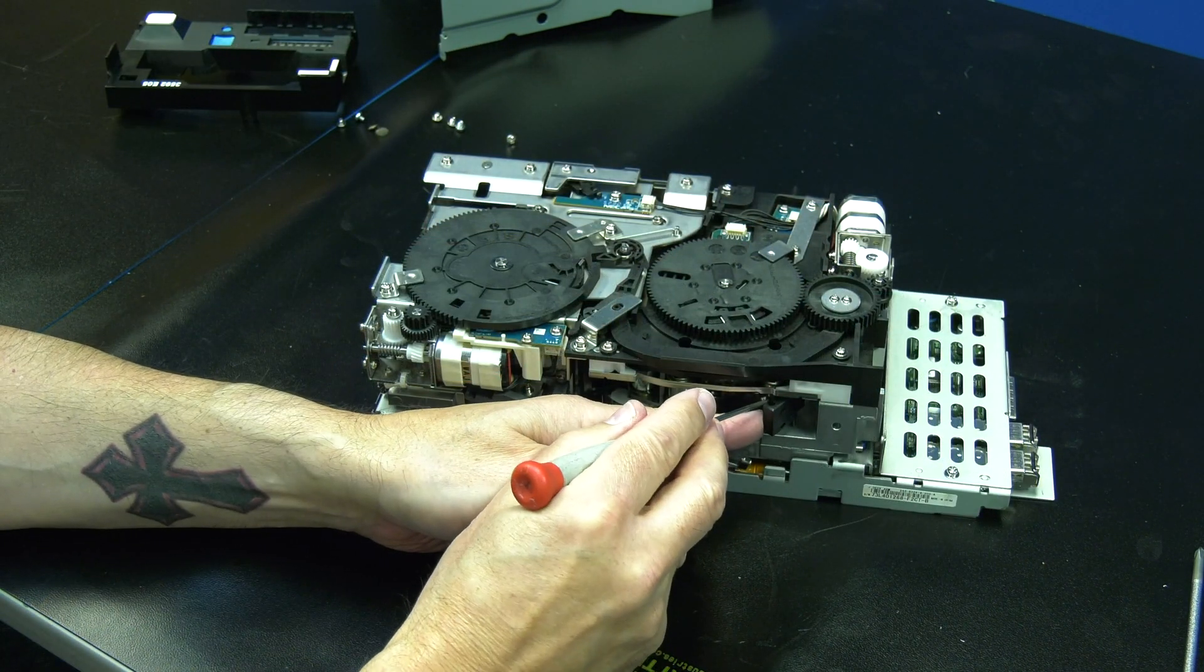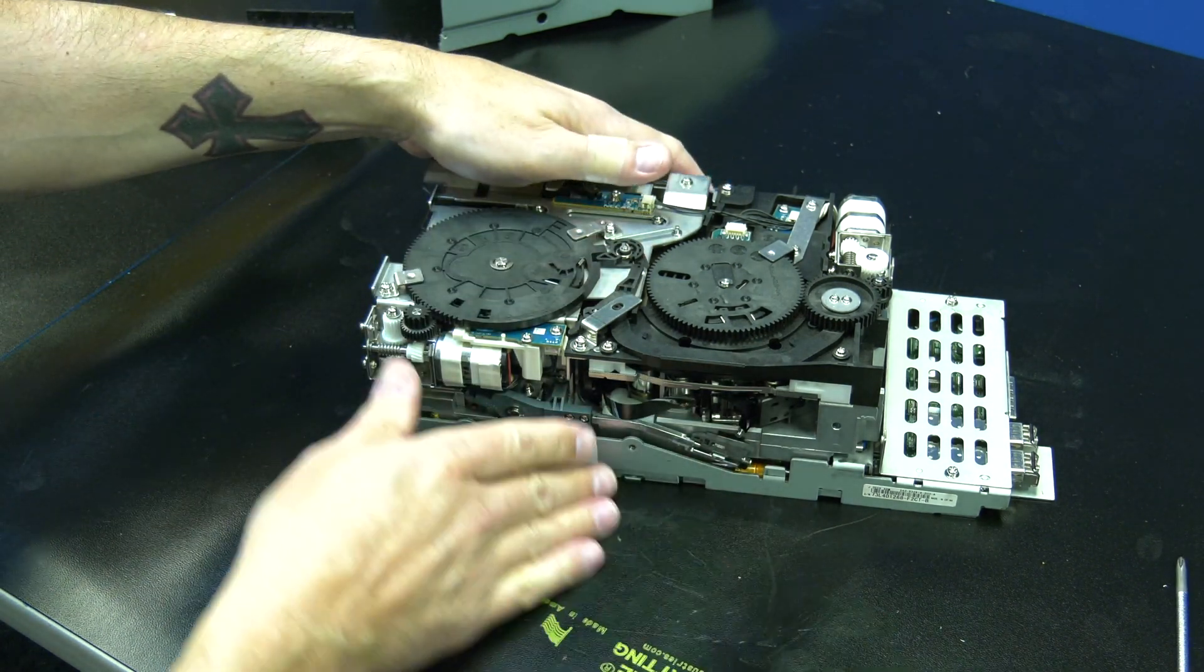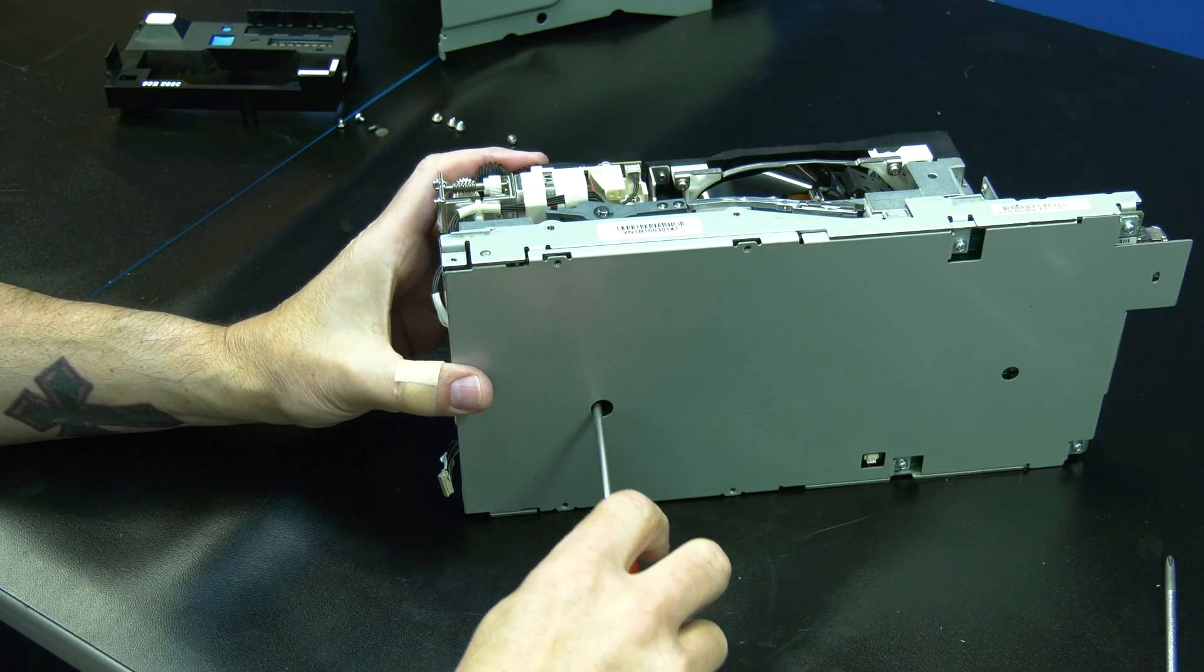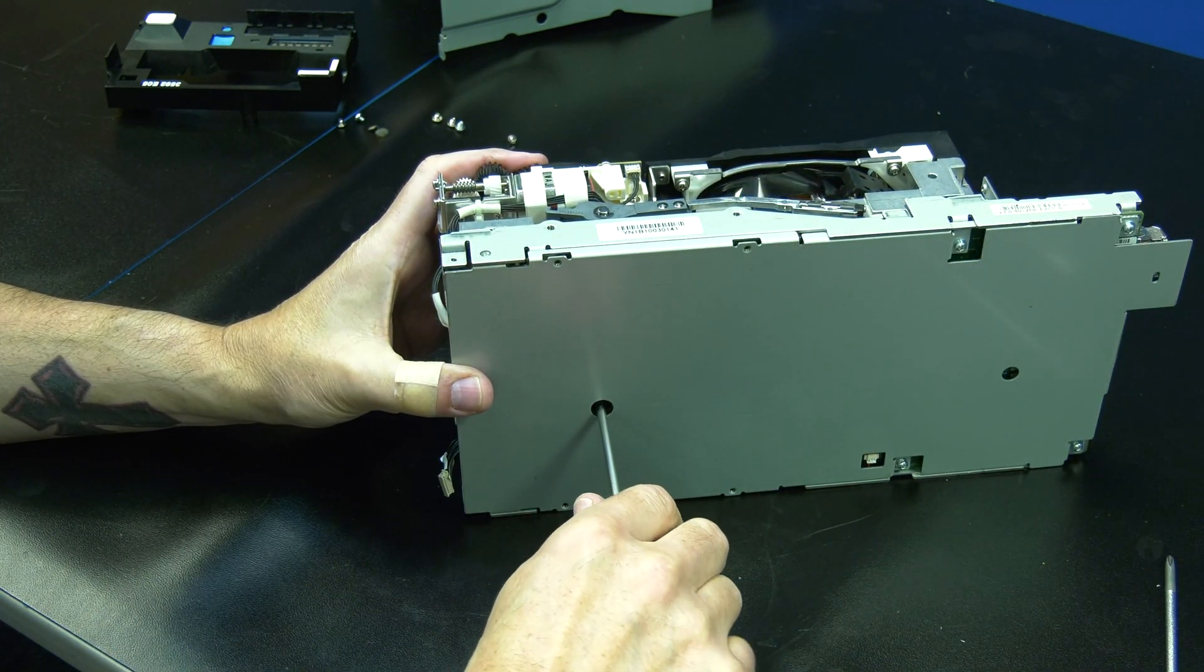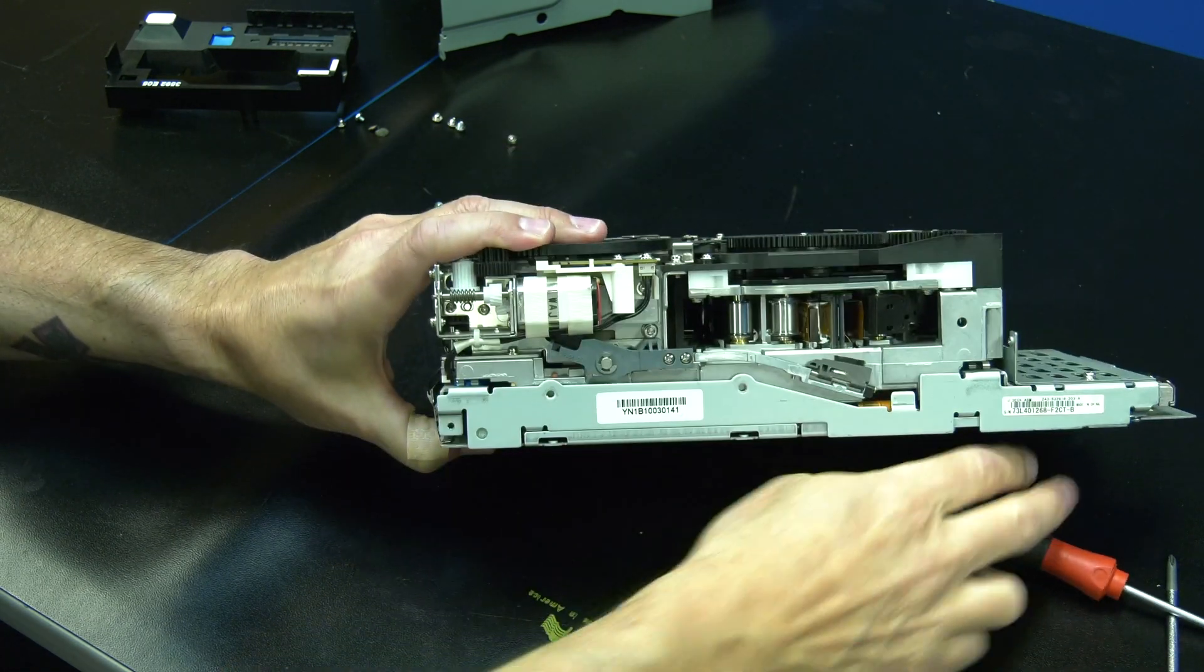Once the tape leader is in view, you can take a small screwdriver and pop the barbell of the leader out of the tape drive arm, freeing it. Then insert your torque screwdriver into the hole in the bottom of the drive and turn clockwise to take up the rest of the slack, pulling all of the tape media into the cartridge.